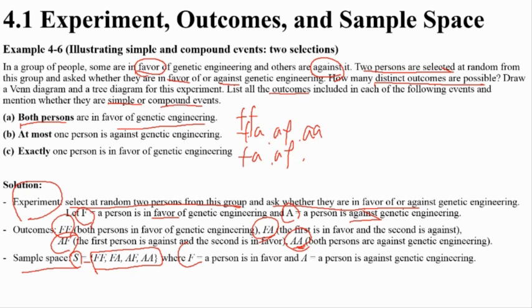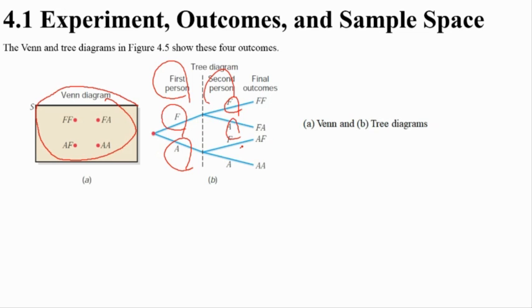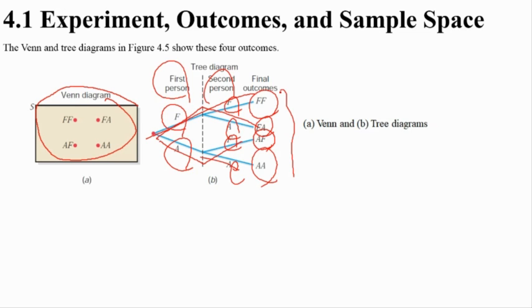The sample space is S = {FF, FA, AF, AA}. We can draw a tree diagram: the first person may be favor or against, and for each, the second person may also be favor or against — giving us the four outcomes: FF, FA, AF, AA.